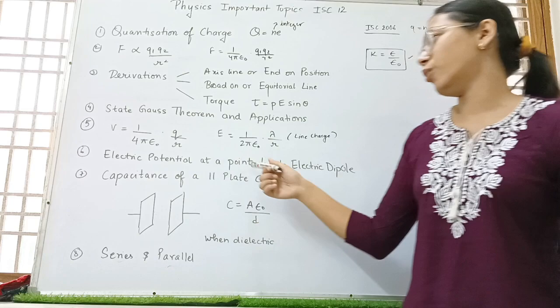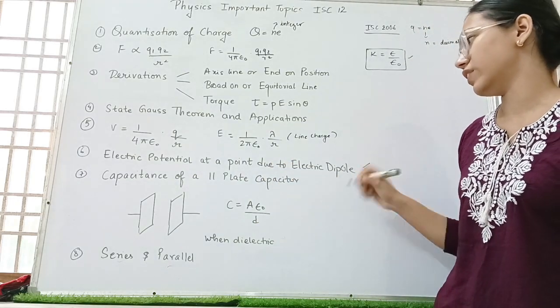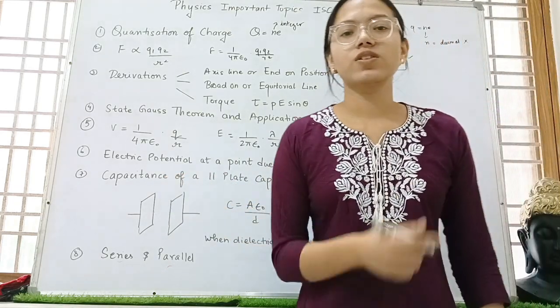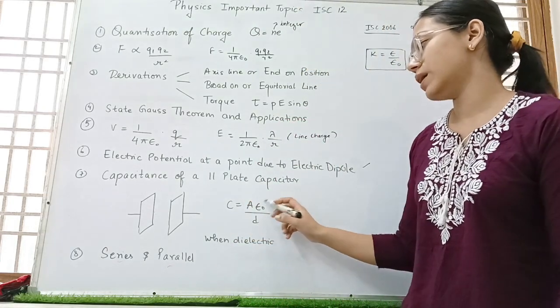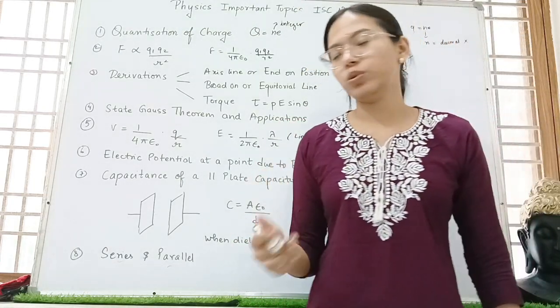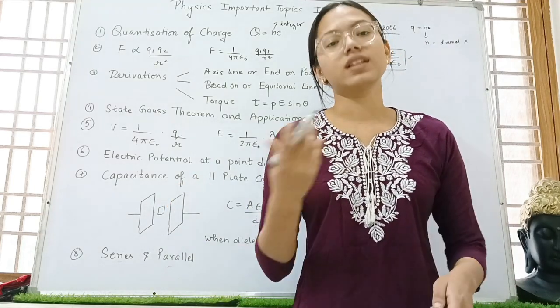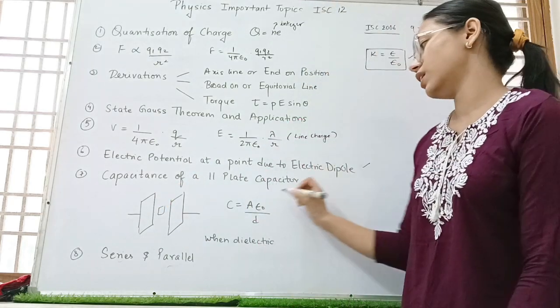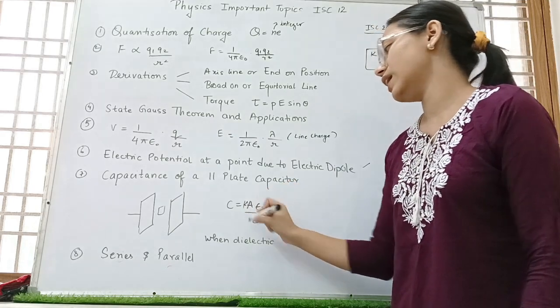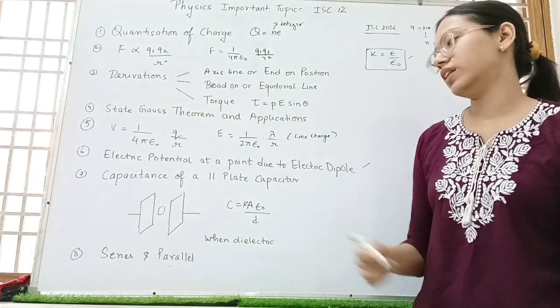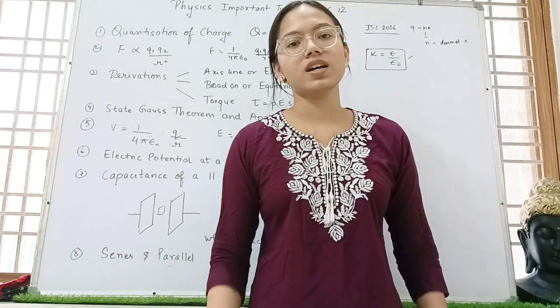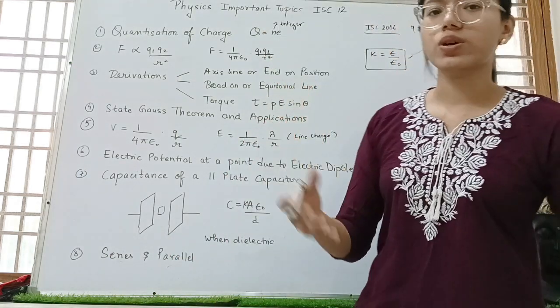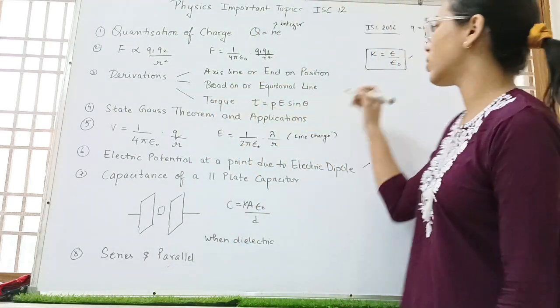Electric potential at a point due to electric dipole. Again, a derivation on this. Then capacitance of parallel plate capacitor. Here, C is equal to A epsilon 0 by D. Whenever we put a dielectric medium in between, that is K, the formula becomes C is equal to Ka epsilon 0 by D. Then series and parallel questions based on capacitors are also asked. Then questions on equipotential surface are also asked.